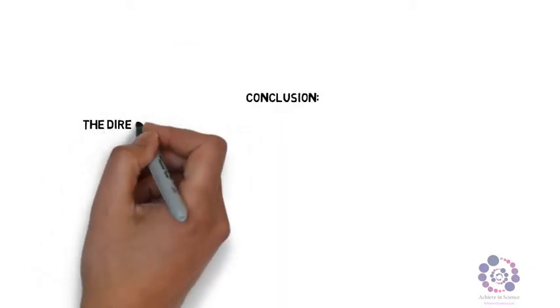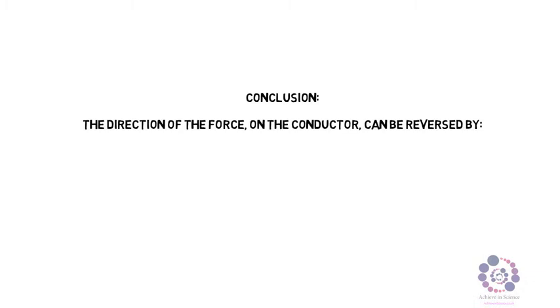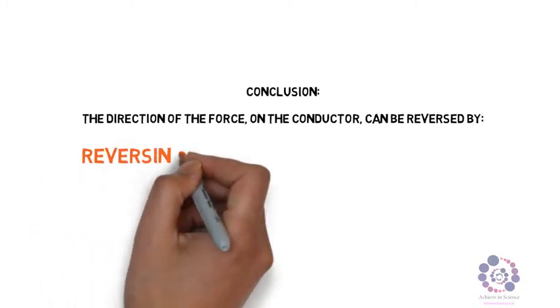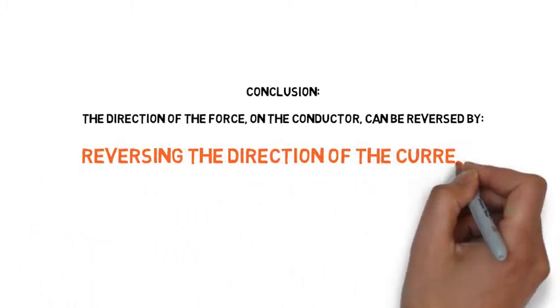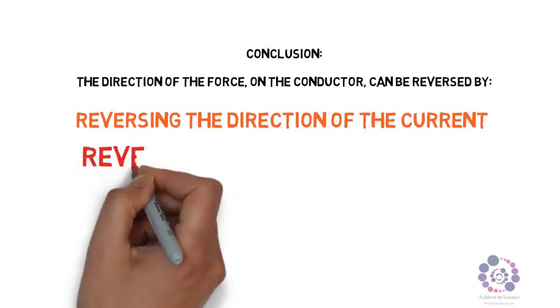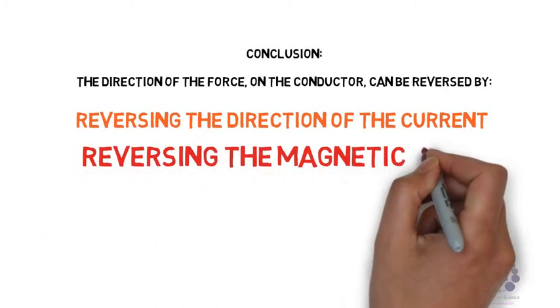So in conclusion, the direction of the force on the conductor can be reversed by, first of all, reversing the direction of the current, and secondly, reversing the direction of the magnetic field.